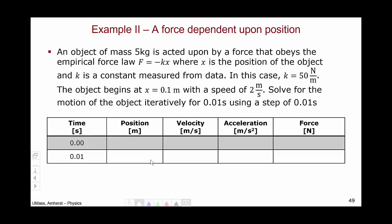So our table will only have two rows, t equals 0 and t equals 0.01, with the usual columns time, position, velocity, acceleration, and force.